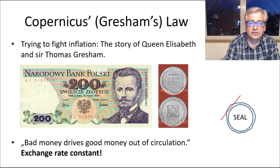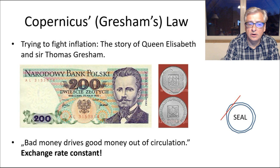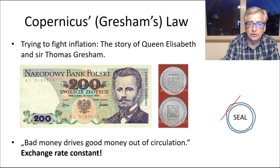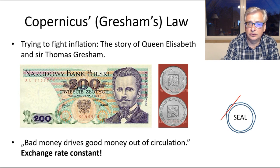It was Sir Thomas Gresham who explained this phenomenon to the Queen. People used the better money as a store of wealth — they wanted to hold it and keep their wealth in it — while choosing to use the old, worse money for buying things. Hence, bad money drives good money out of circulation; only bad money stays in circulation.